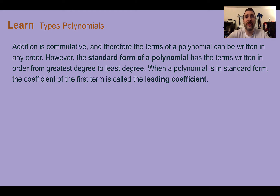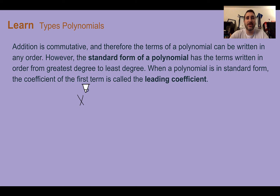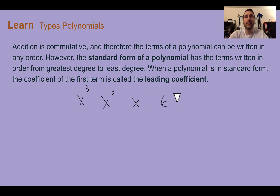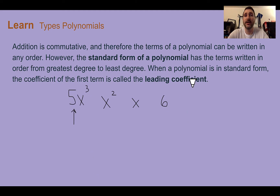Another important thing is to put your polynomial into standard form, which uses the degrees of each of the terms. Standard form means the variables with their exponent degrees are in order from greatest to least. So x to the 3rd comes first, then x to the 2nd, then x to the 1st, then the constant. Once in order, the number in front of the first term is called the leading coefficient, because it is leading the way.